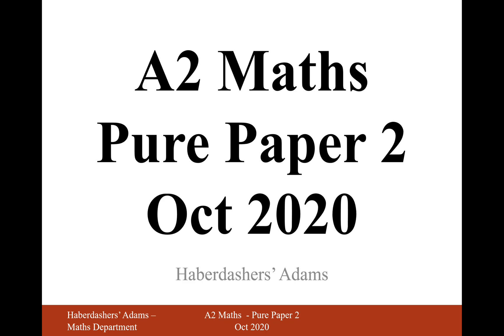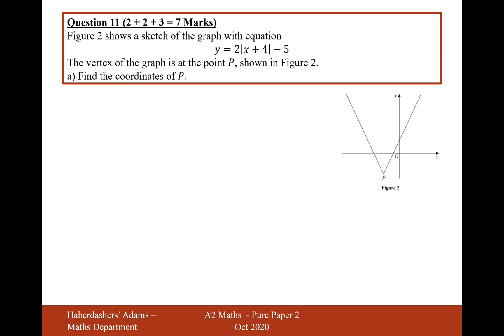Hello there, welcome to the October 2020 Paper 2. Here we're looking at Question 11. Figure 2 shows a sketch of the graph with equation y equals 2 mod x plus 4 minus 5. The vertex of the graph is at point P, shown in Figure 2, so that's point P down here. Find the coordinates of P.